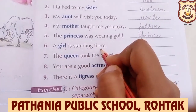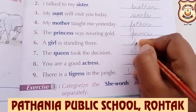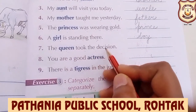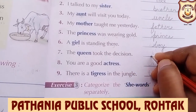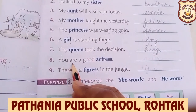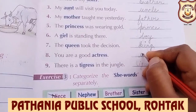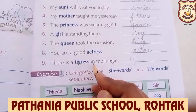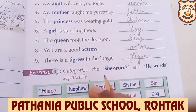The girl is standing there — The boy is standing there. The queen took the decision — Queen, King. The king took the decision. You are a good actress — You are a good actor. A-C-T-O-R. There is a tigress in the jungle — There is a tiger in the jungle.